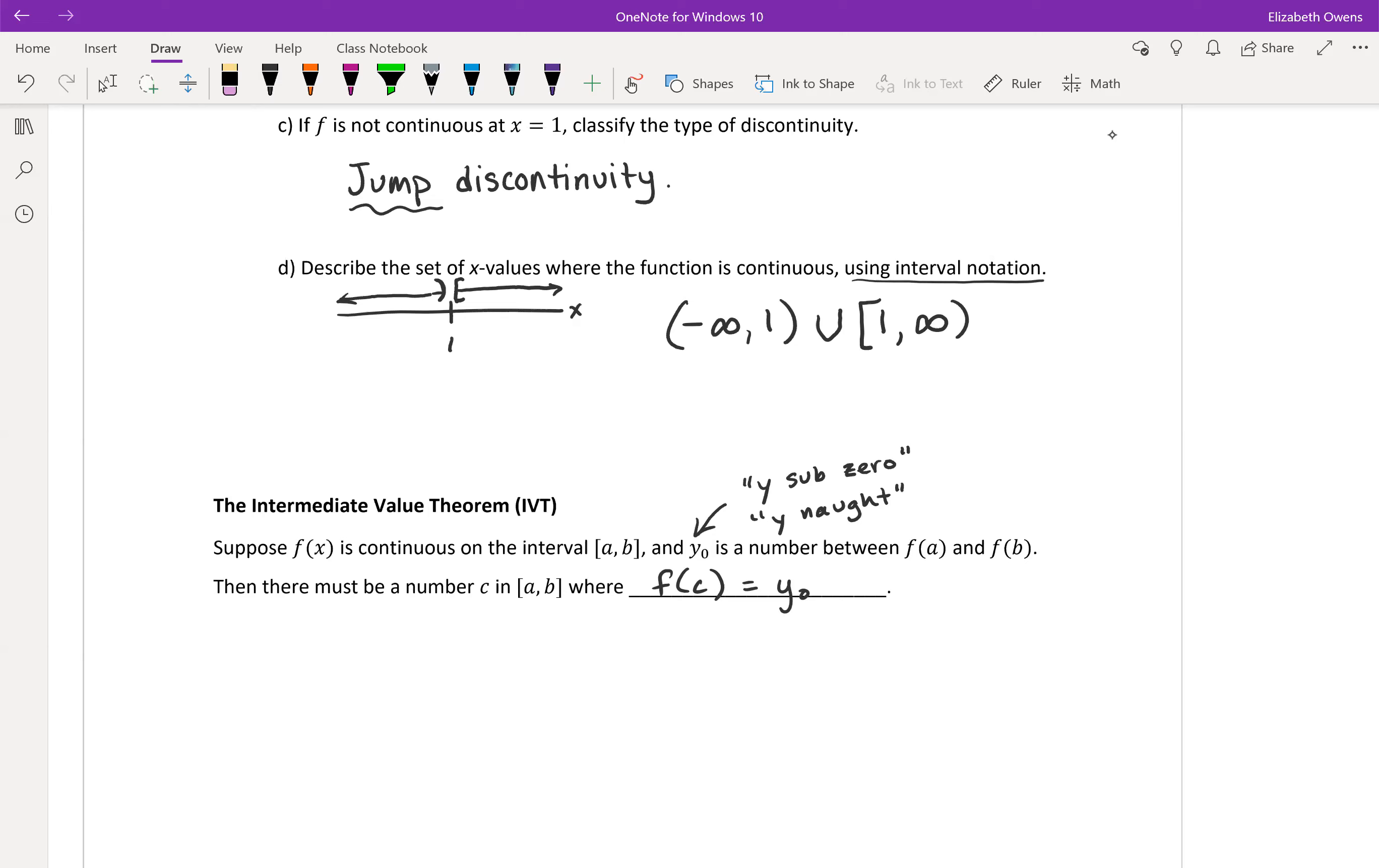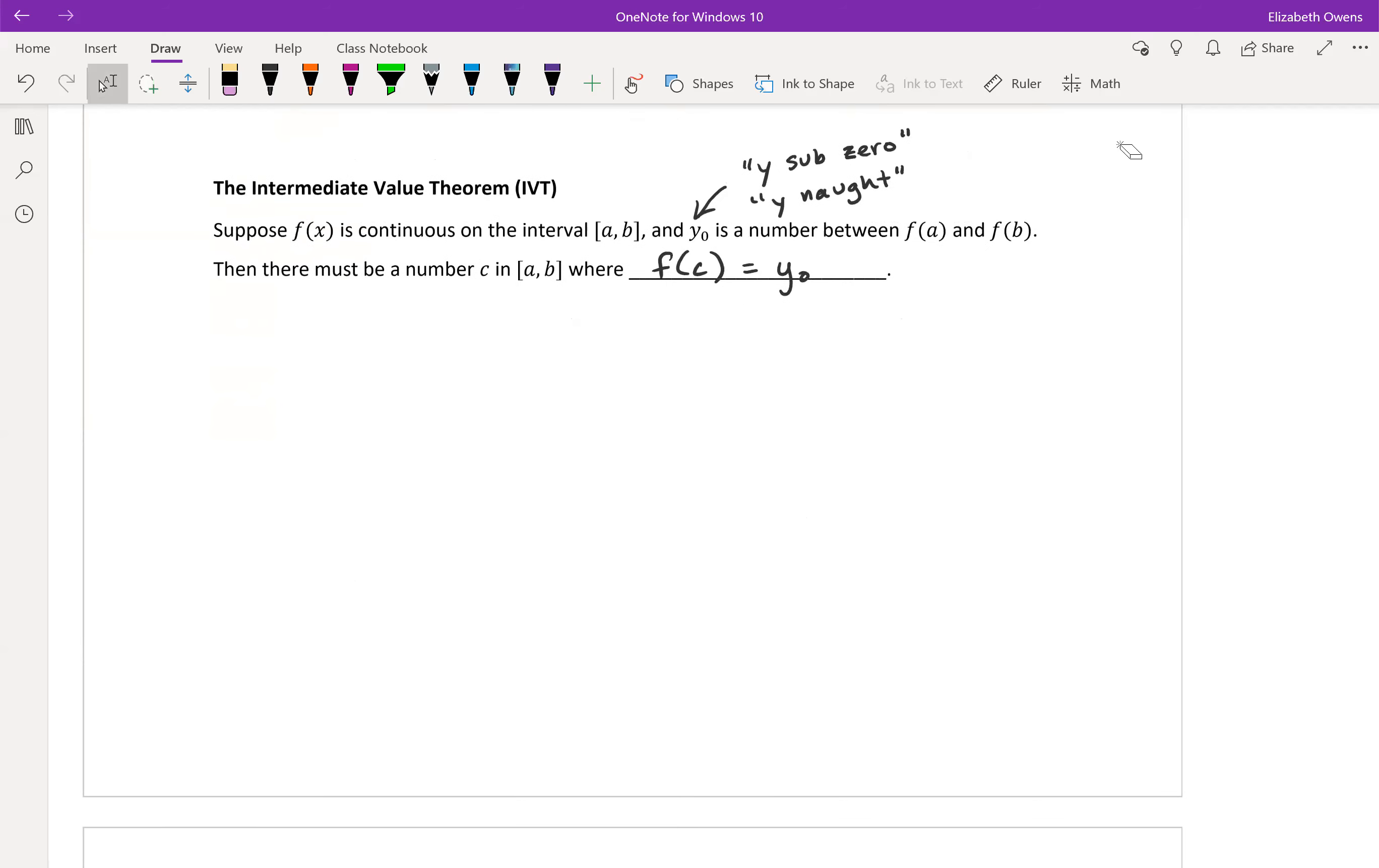That is our theorem statement. Let's definitely look at this with a picture as well, that helps. Let's set ourselves up a little axis here: x, f(x). Now f(x) needs to be continuous on the interval from a to b. So a, b. Let's put some points there. So that would be f(a) for that y value, and this is f(b) up here.